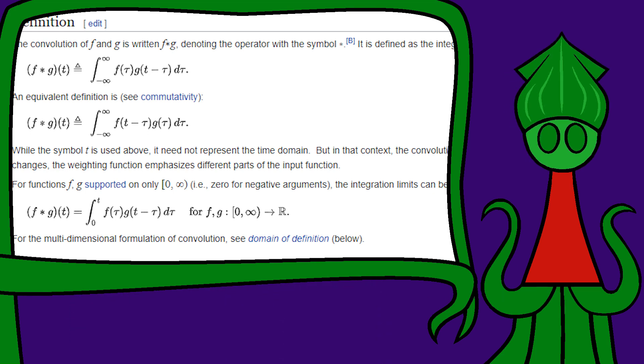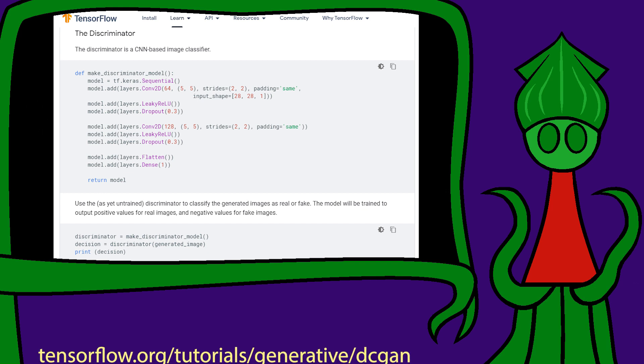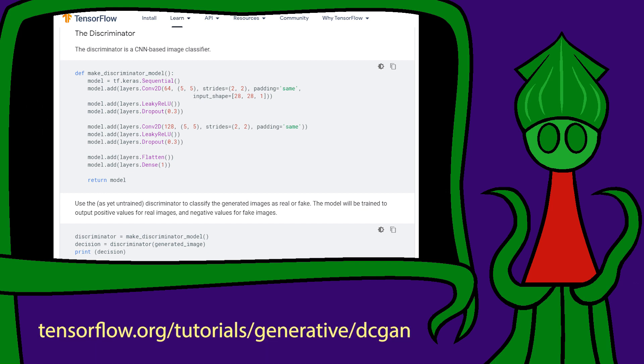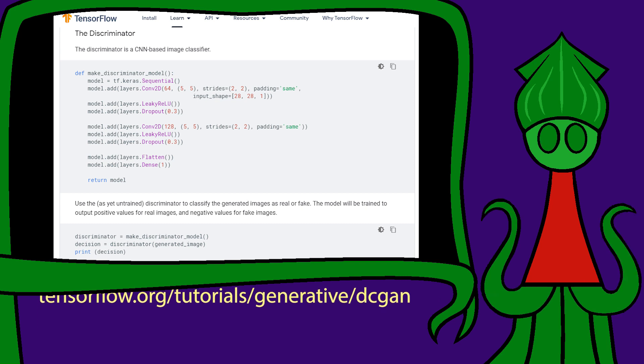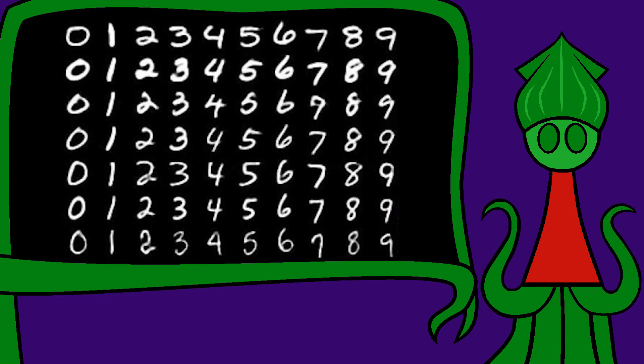My first step was copy-pasting a generative adversarial network tutorial example to make sure it worked and I wasn't going mad. That example was written to use the classic MNIST dataset of handwritten numbers.